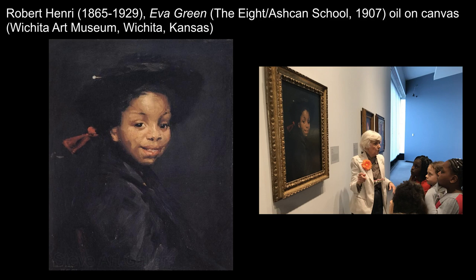He painted this depiction of his neighbor's daughter, Eva Green, on Christmas Day in 1907. He shows this little girl with a sense of immediacy, as if she has paused in her movement to pose for him. We see gestural brushstrokes, especially in the forehead and temple. His depiction of her is direct, immediate, and authentic, and shows the influence of Baroque art, especially Dutch and Spanish, and French realism.